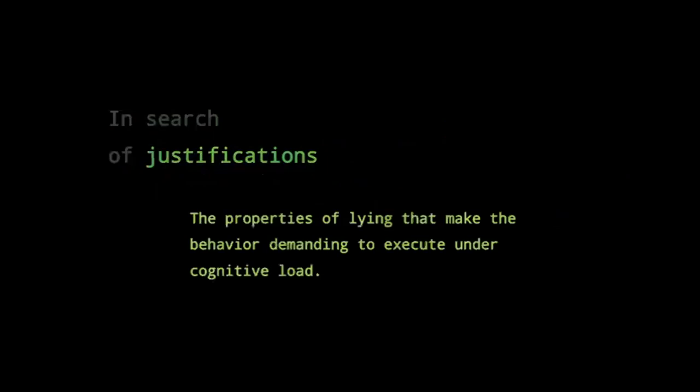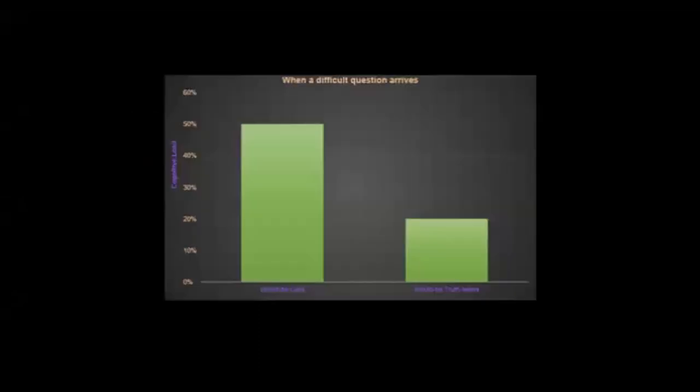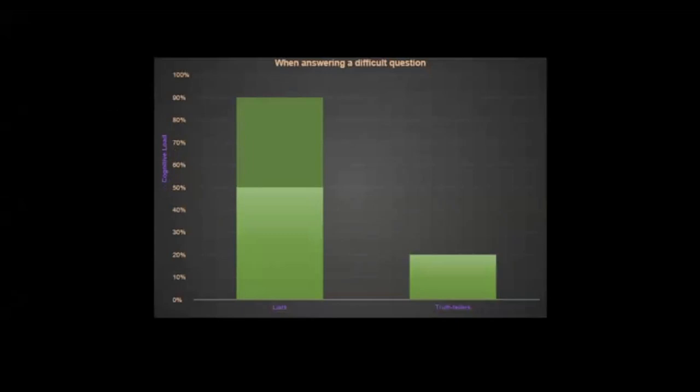What does justification mean when it comes to cognitive load lie detection? The justifications would be the properties of lying that make the behavior demanding to execute and the cognitive load. I think these justifications should do two things: they should warrant a counterfactual that if a difficult question arrives, would-be liars would be starting off at a handicap. And the justification must also warrant the notion that if you impose cognitive load, you compound that difficulty — essentially, truth tellers answering the question should be tackling a relatively milder challenge, and liars should have a greater challenge. So I began to search for these justifications, and I kept finding the same list or parts of the same list.